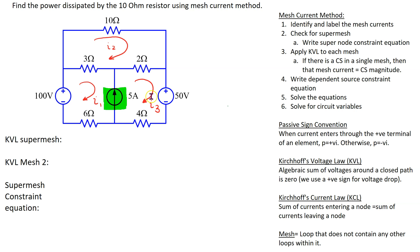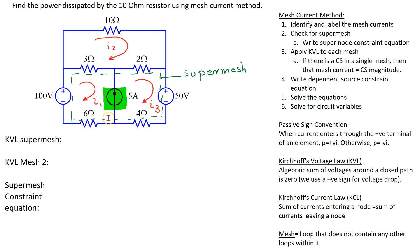Here we have the 5-ampere current source located between meshes 1 and 3, hence we have a super mesh. We need to identify the boundary of the super mesh. This is done by removing the current source — we exclude or remove this current source and then combine the two original meshes. By eliminating the current source we have the super mesh, which has six circuit elements.